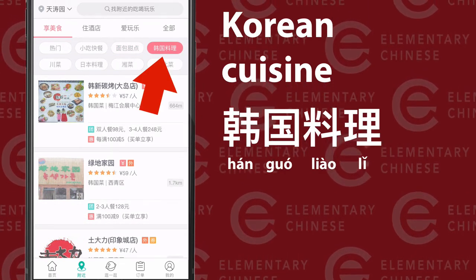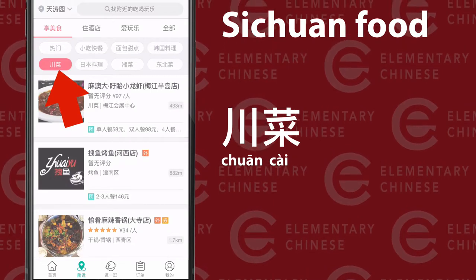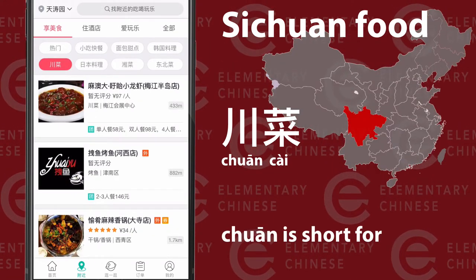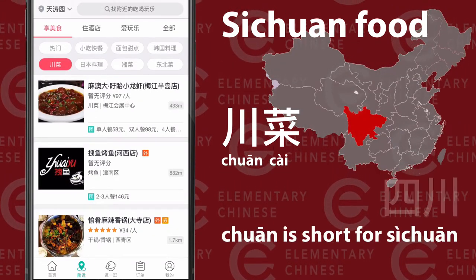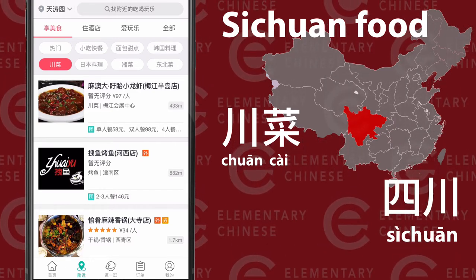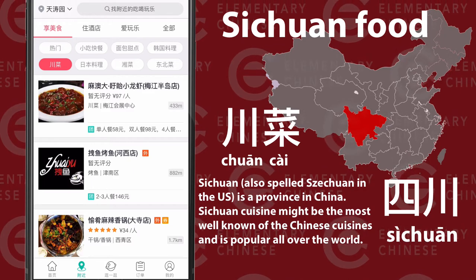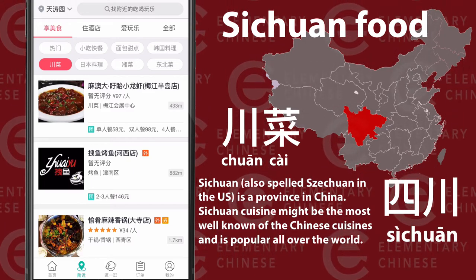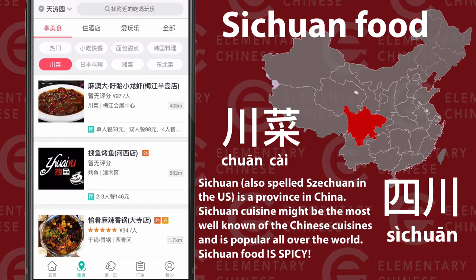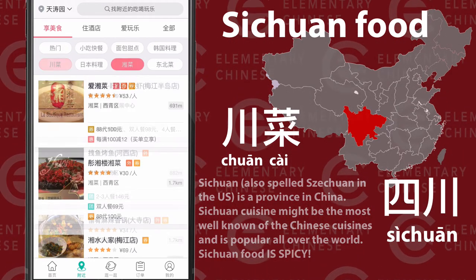韓國料理 is Korean food. 川菜 is Sichuan food. If you go to elementarychinese.com/food, my food course, I do talk about ordering food — because if we're going to eat and we usually go to the same places, I want to equip you with some language scripts so you can learn how to interact at the places you go. That way you can level up your day-to-day Chinese.